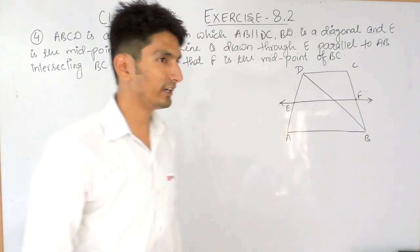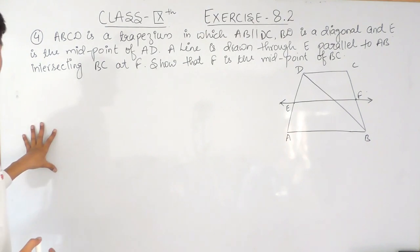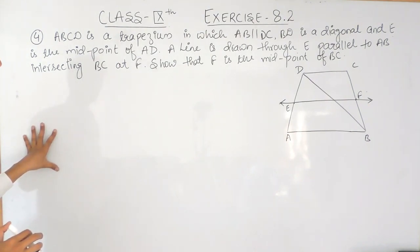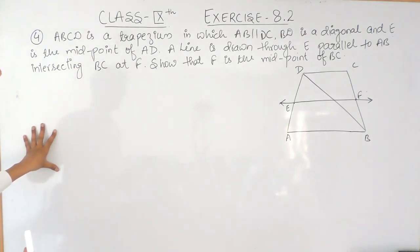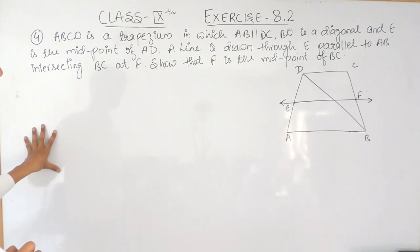Hello everyone. In this video we are going to solve the fourth question of exercise 8.2. The question says: ABCD is a trapezium in which AB is parallel to DC, and BD is a diagonal, and E is the midpoint of AD. A line is drawn through E parallel to AB intersecting BC at F. You have to show that F is the midpoint of BC.